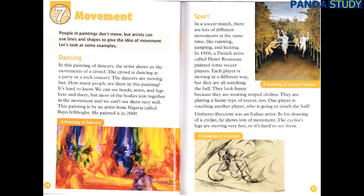In a soccer match, there are lots of different movements at the same time — like running, jumping and kicking. In 1908, a French artist called Henri Russo painted some soccer players. Each player is moving in a different way, but they are all watching the ball. They look funny because they are wearing striped clothes and playing a funny type of soccer. Umberto Boccioni was an Italian artist. In his drawing of a cyclist, he shows lots of movement — the cyclist's legs are moving very fast, so it's hard to see them.